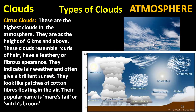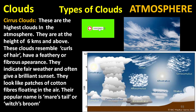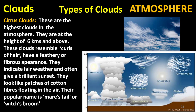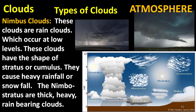Cirrus clouds are the highest clouds in the atmosphere, found at a height of six kilometers and above. These clouds resemble curls of hair and have a feathery or fibrous appearance. They indicate fair weather and often give a brilliant sunset. They look like patches of cotton fibers floating in the air. Their popular name is mare's tail or witch's broom.